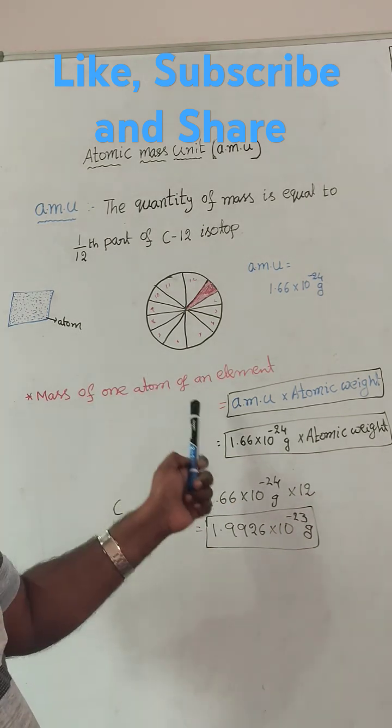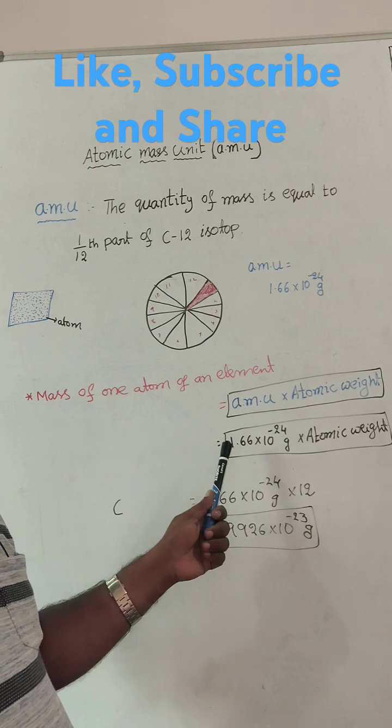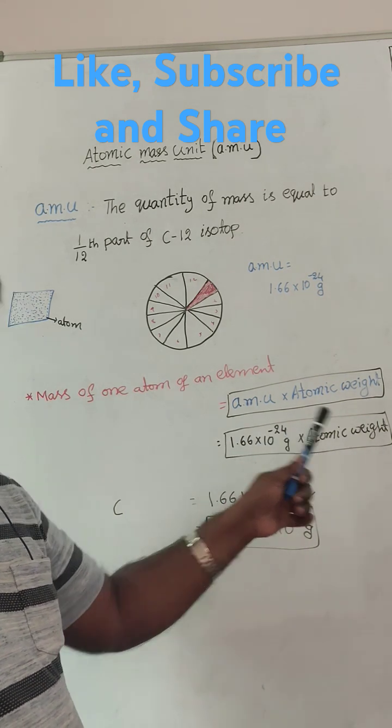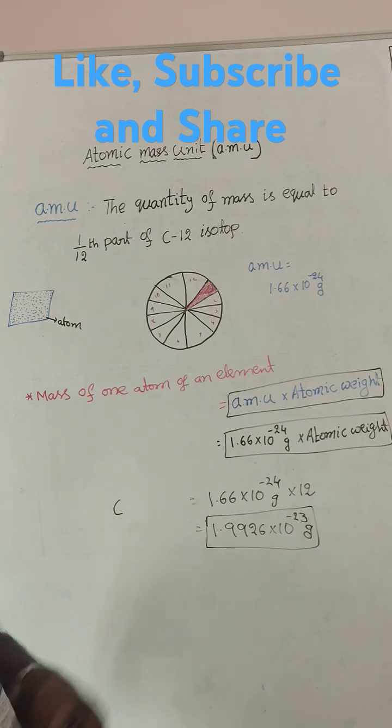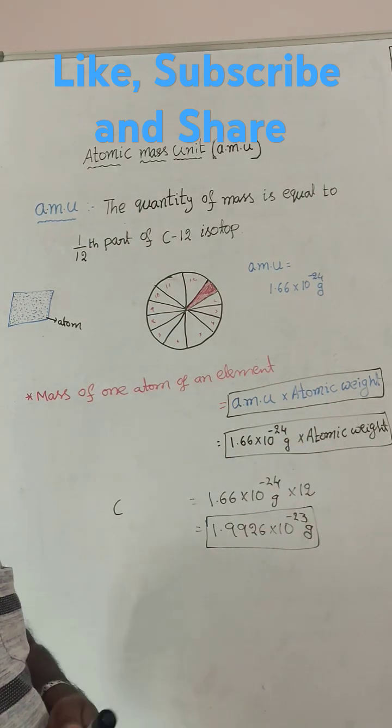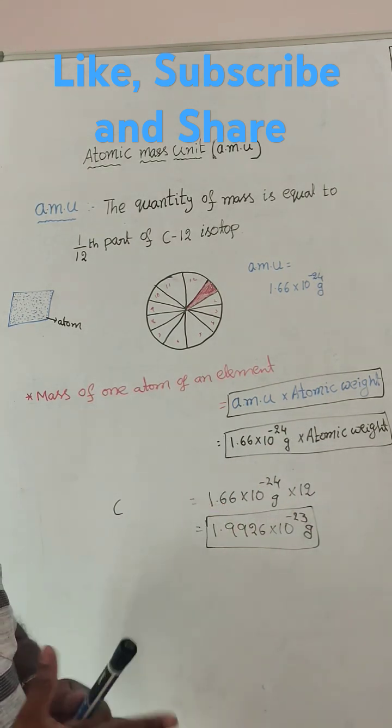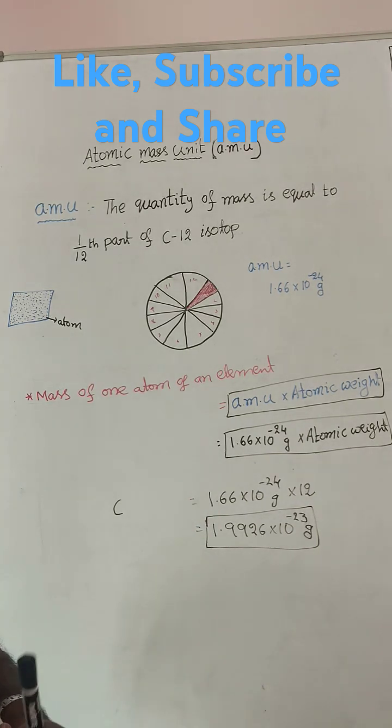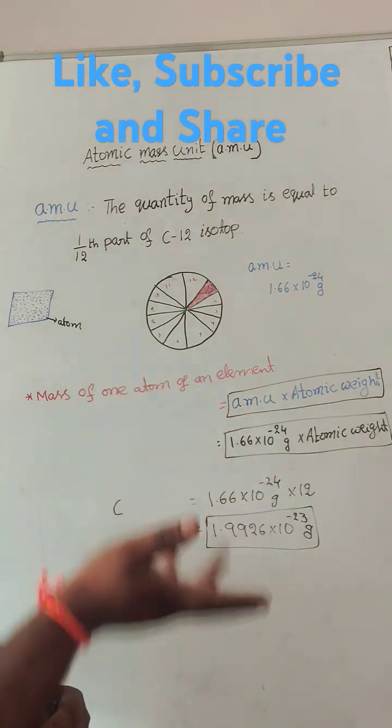For any element, general equation formula: 1.66 into 10 to the power of minus 24, into that particular element atomic weight. Oxygen you have taken means atomic weight 16. 16 into 1.66 into 10 to the power of minus 24. If you multiply, you will get the value of mass of one atom of oxygen.